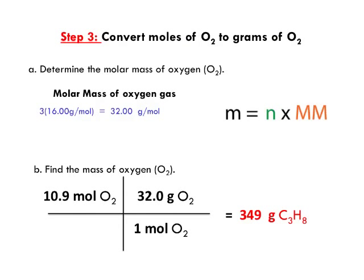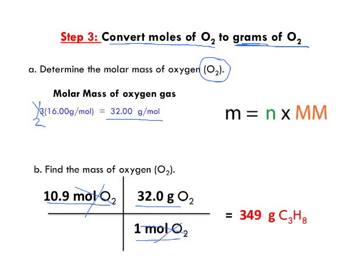Our last step is to convert those moles of oxygen into grams of oxygen — remember, our answer needs to be in grams. First, we need the molar mass of oxygen. Oxygen is a diatomic molecule, so it's 2 times 16, which gives us 32 grams per mole. Taking the 10.9 moles of oxygen and multiplying by 32 grams per mole — moles of oxygen cancel out — gives us 349 grams of oxygen.